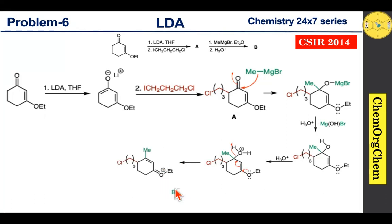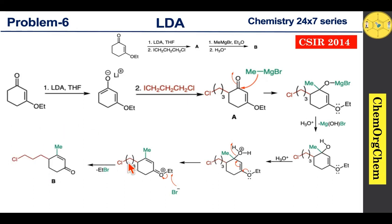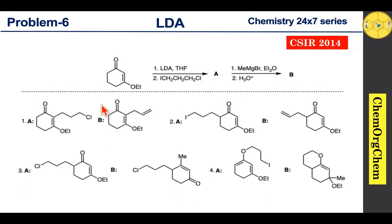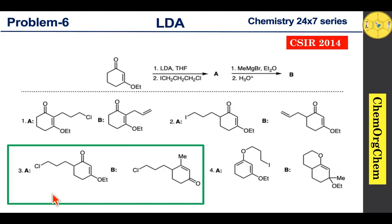Now Br⁻ ion readily attacks this carbon, followed by the oxygen-carbon bond breaking down, and the electrons move toward the oxygen atom. This Br⁻ ion comes from the magnesium hydroxy bromide in the presence of acid. In this particular step, either Br⁻ or hydroxy ion can initiate the step to produce the corresponding product B. Based on our discussion, we can easily eliminate options 1, 2, and 4. The correct option for this question is number 3.